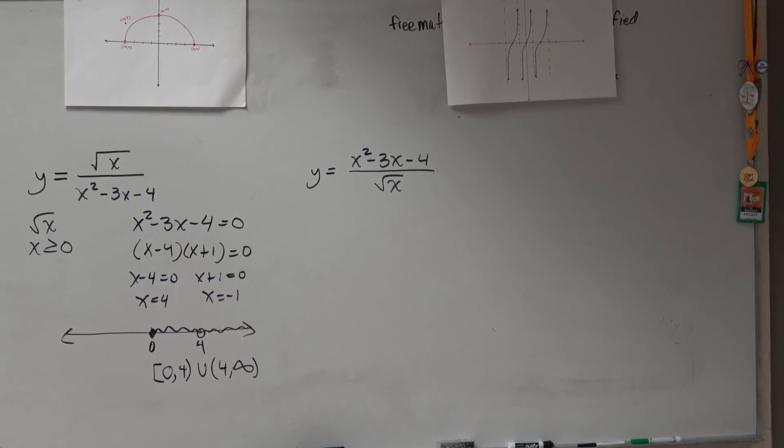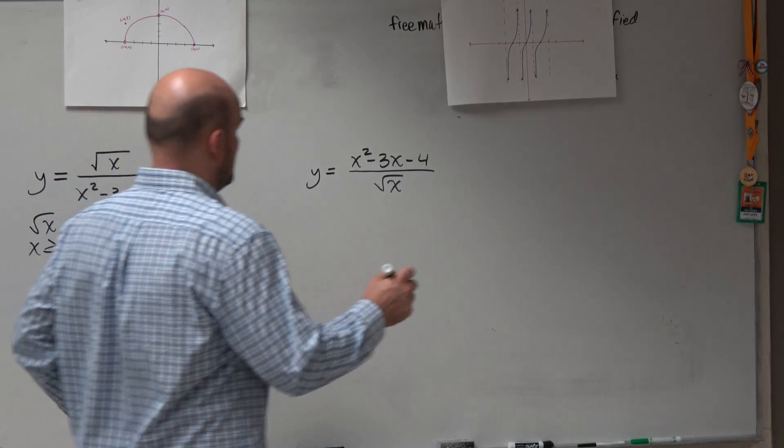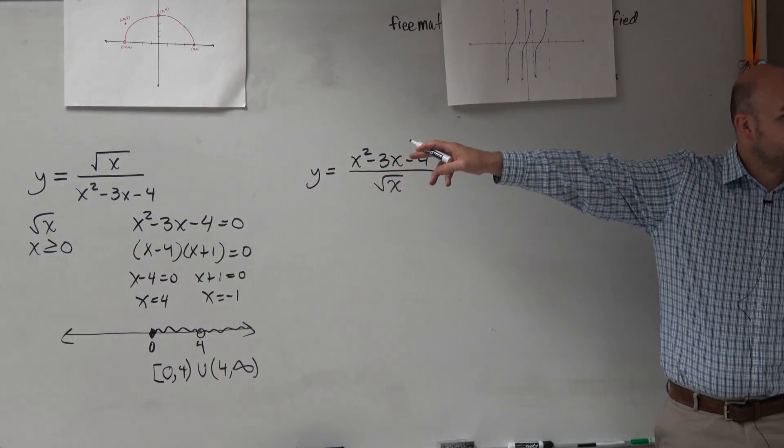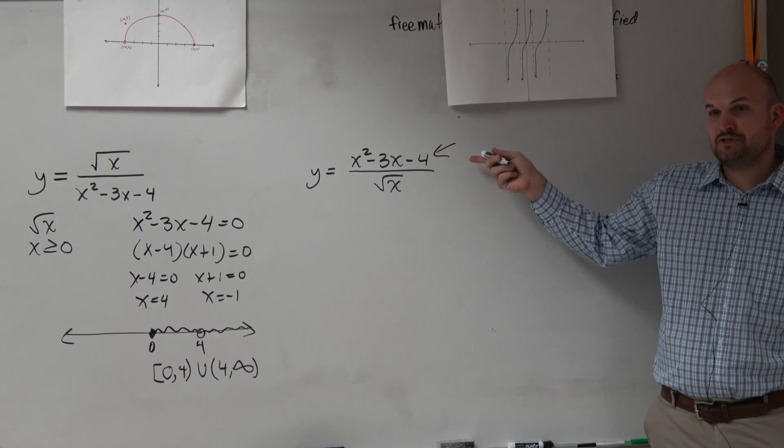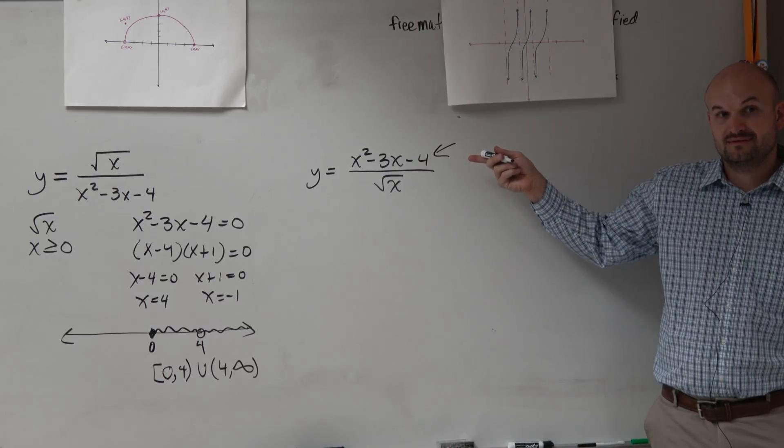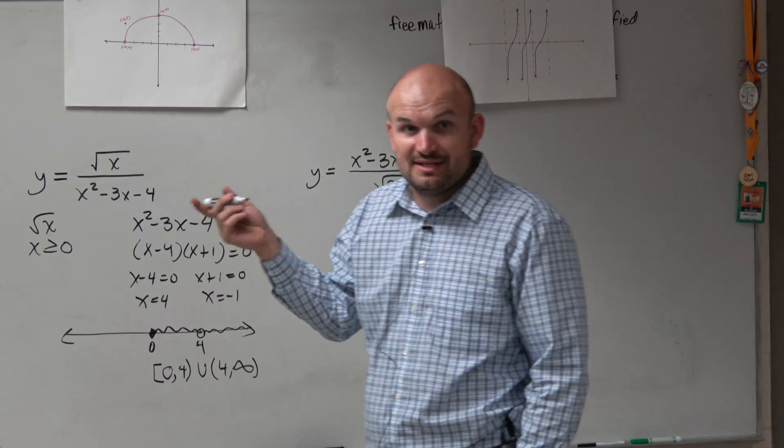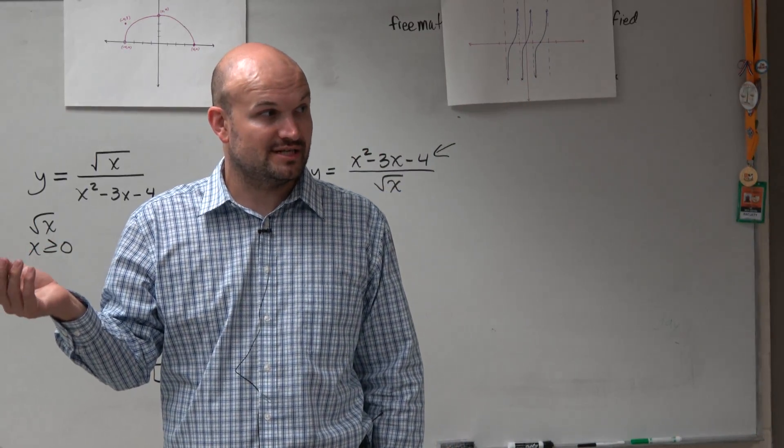So in this last example, we look at our numerator. See, in the last example, our numerator had a restricted domain. Does this numerator have a restricted domain? No, it's a quadratic, right? So do we care about what's in the numerator if it's an unrestricted domain?